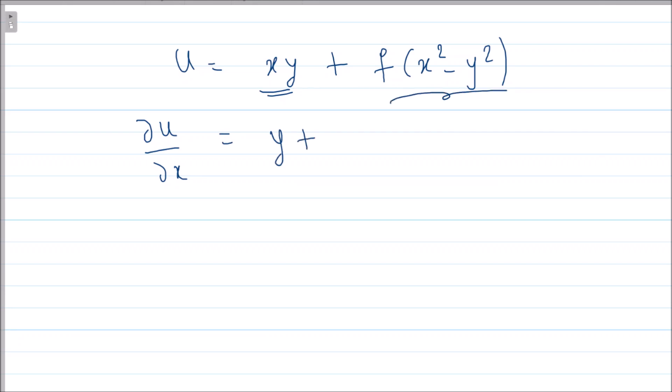What you do is call your x² - y² as t. This will become only f(t). So now what do we have? Your f is a function which is depending on t, and your t is a function which is depending on x and y.